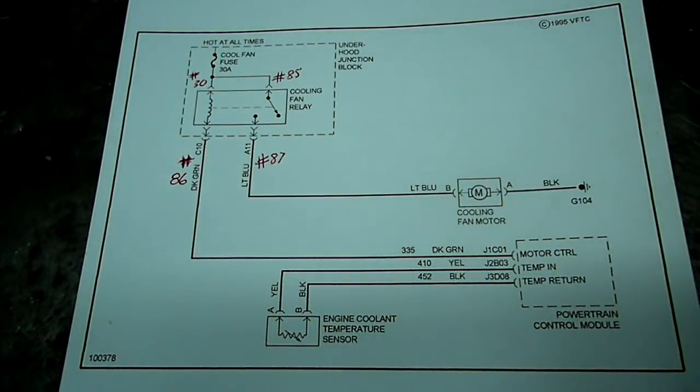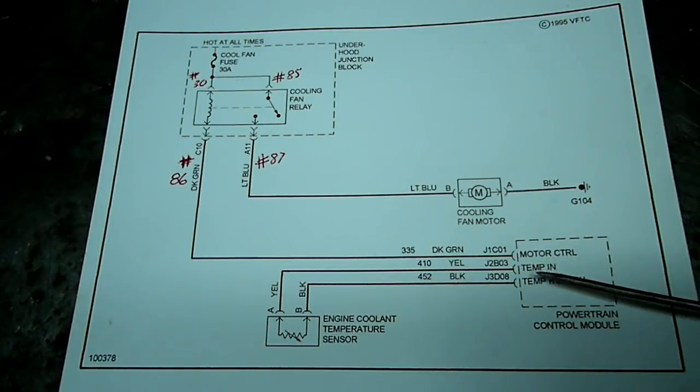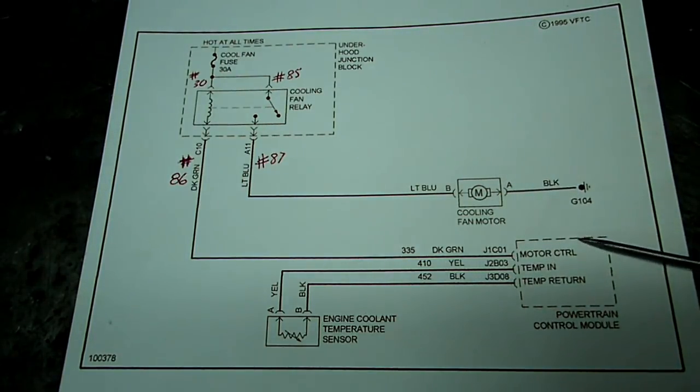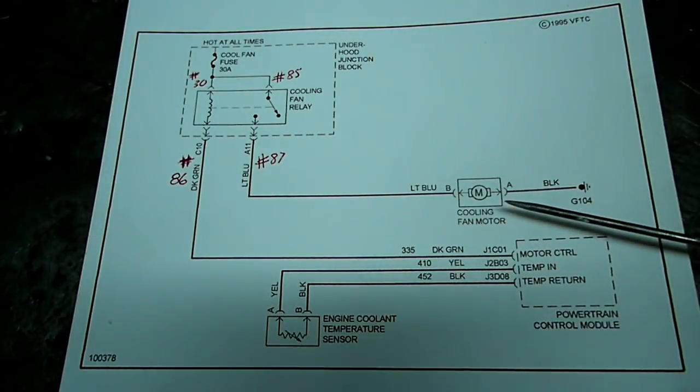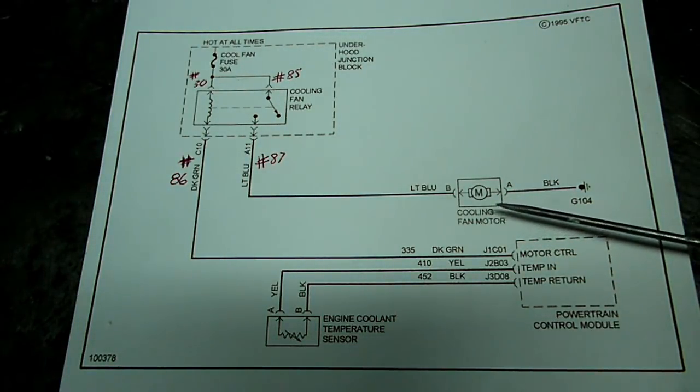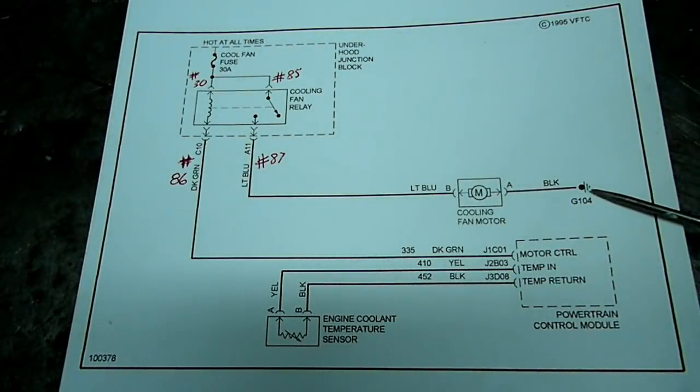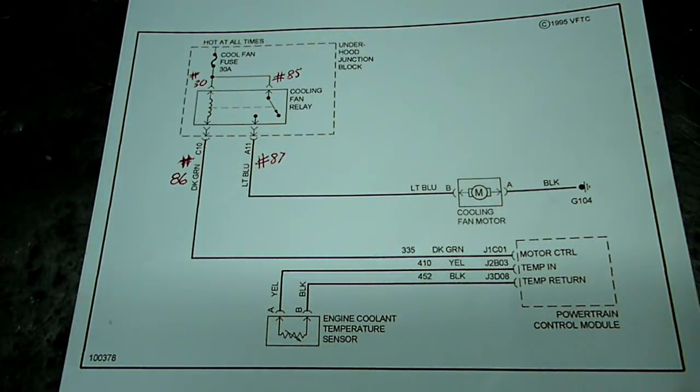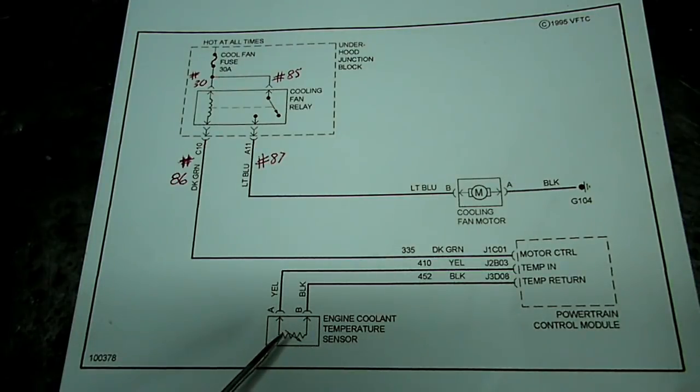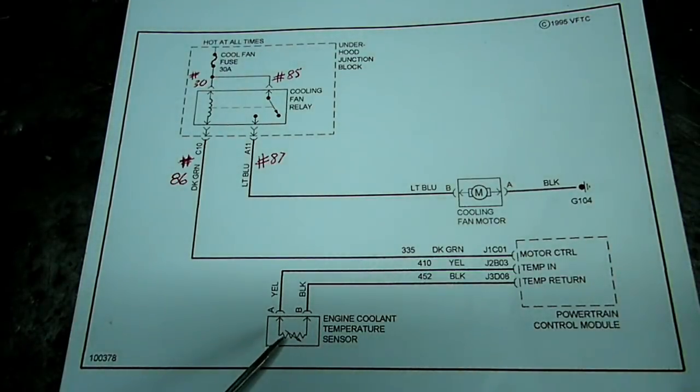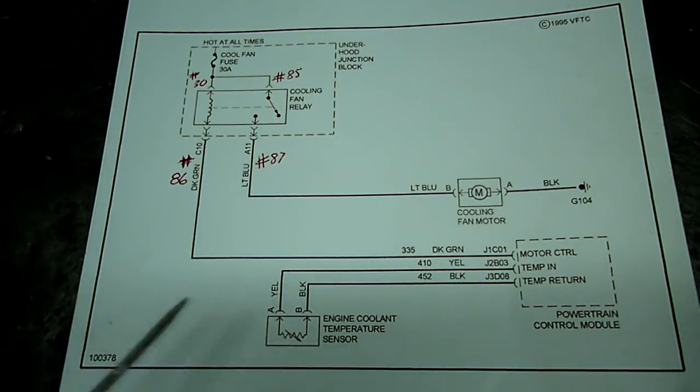Now what we got down here is a picture of the computer, the powertrain control module. Here we have a symbol of the coolant fan motor right here. Here is a symbol for ground. Over here we have a symbol for a thermistor, a resistor. This is the engine coolant temp sensor right here.